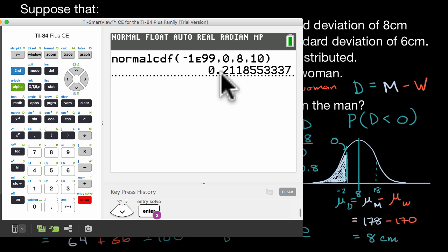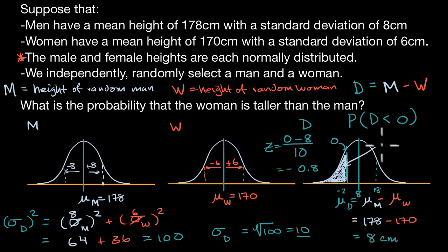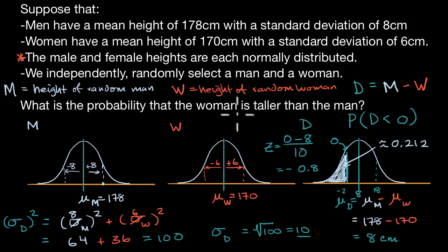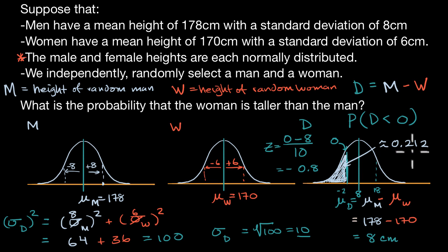We get approximately 0.212. So the probability that the woman is taller than the man is approximately 0.212, or about a 21.2% chance — a little better than one in five.